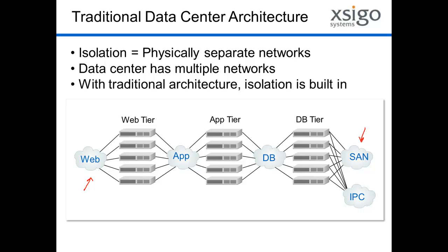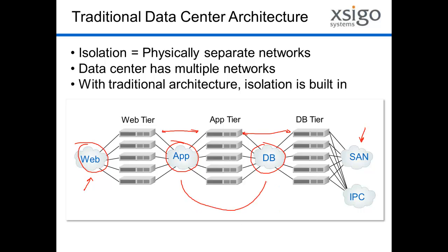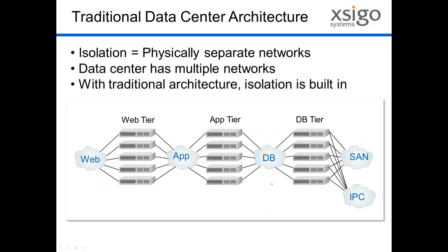The traditional data center used to be organized in three tiers. This tiering model actually created isolation automatically, because you had a web tier connected out to the internet, an app tier connected between the web servers and the app servers, and a database tier connected between the app servers and the database servers. All of these were physically isolated — one network did not talk directly to another network. So isolation was built into that model.